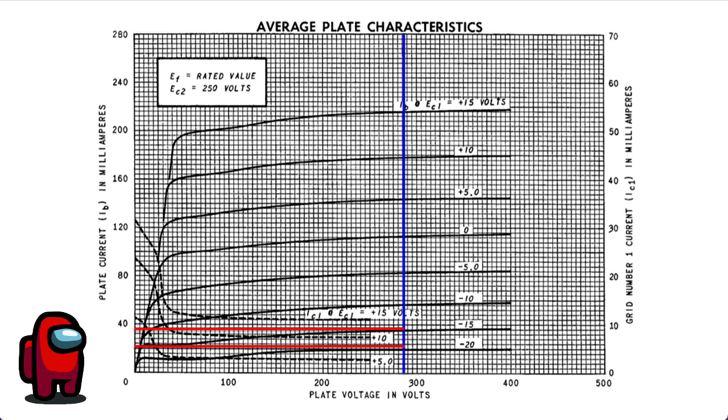The main problem arises in the fact that this graph is only really valid for a screen-to-cathode voltage of 250 volts, but our actual screen-to-cathode voltage is 286 volts. Now, the manufacturers could provide a series of graphs like this for different screen-to-cathode voltages, but that would make for a really long data sheet. And after all, the main grid-to-cathode line we're actually interested in is this grid-to-cathode equals zero volt line.